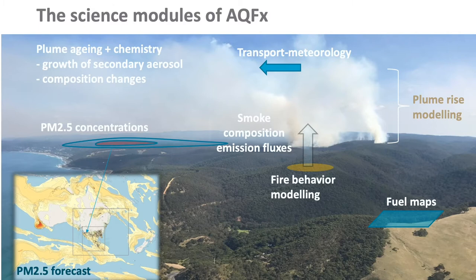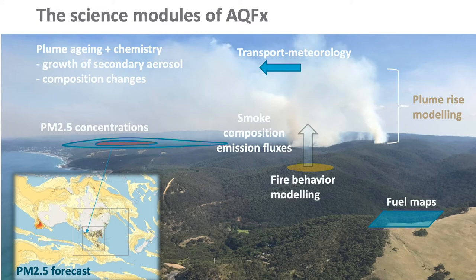I wanted to look under the hood of AQFX. It does forecasts of 72 hours for large-scale smoke and 24 hours for prescribed burns. Where it really starts is with fuel maps - what's the vegetation that's going to be burned, what's its moisture, what's its behavior when you actually burn it. That feeds through into fire behavior modeling: how will the fire propagate during the course of a day or a few days, and then given how that fire is behaving, what are the emissions of smoke that come from that fire over time?